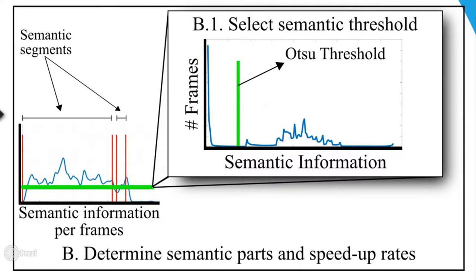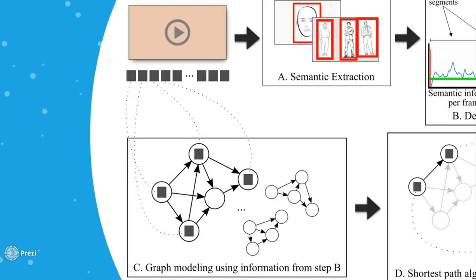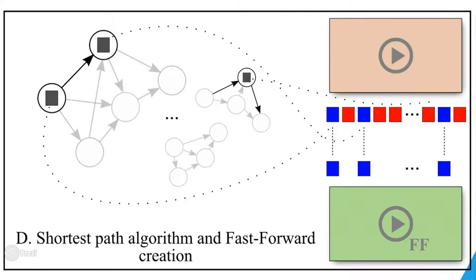Every time span with semantic information above the threshold represents a semantic segment. The video is modeled as a graph, where the frames are mapped as nodes and the relation between two frames is mapped as an edge. The frames in the shortest path of this graph compose the fast-forward video.